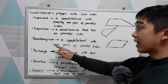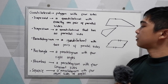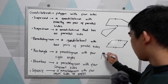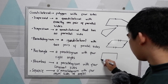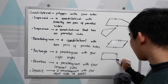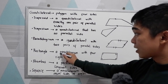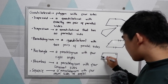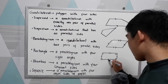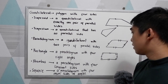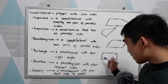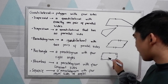Rectangle — it is a parallelogram with four right angles. So we're going to draw a rectangle with all four angles at 90 degrees. And since it is a parallelogram, this side is parallel to this one, and this side is parallel to another side. In a rectangle, opposite sides are equal, so this side is equal to the measure of the other side.